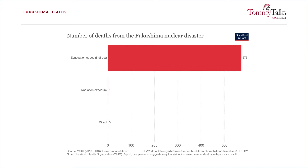Rather, 573 people, mostly old and in poor health, died not because of radiation exposure due to the breach, but because of the physical and mental stress of the evacuation itself, combined with lack of access to healthcare.